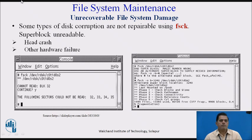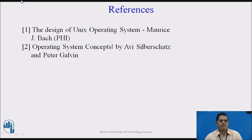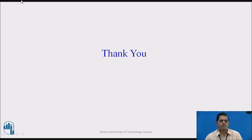The second type of file system damage is unrecoverable file system damage. In this case, some types of disk corruptions cannot be properly repaired using FSCK. Thank you.